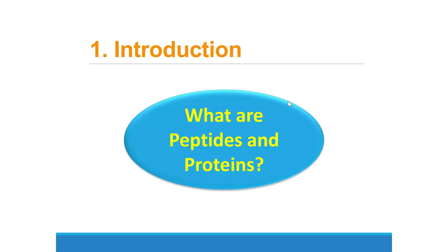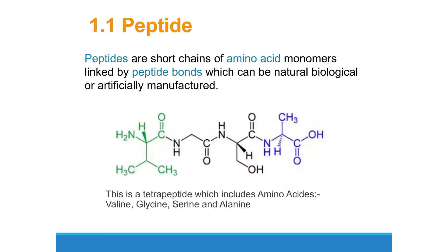Today we are going to look at peptides and proteins. Peptides are short chains of amino acid monomers linked together by peptide bonds, which can be naturally synthesized or artificially manufactured. Below we have a structure of a peptide made up of four different amino acids: valine, glycine, serine, and alanine. It is called a tetrapeptide because it contains four amino acids.